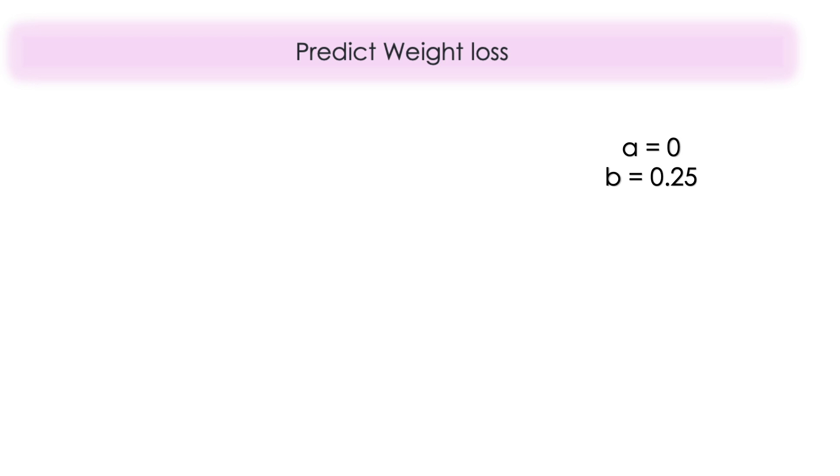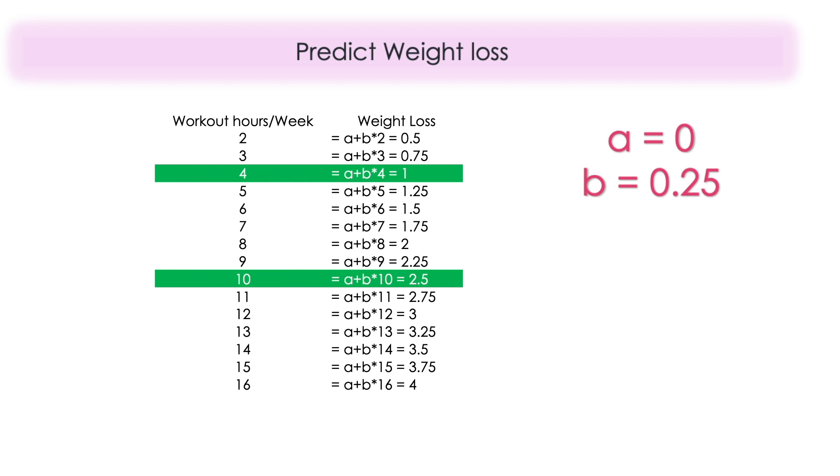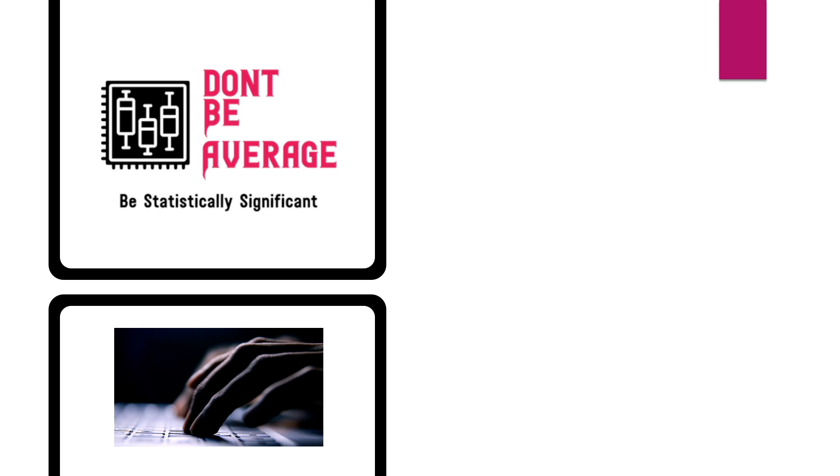Let's make it even better. We will check out the weight loss example. So let's say here estimated a is zero and b is 0.25. Let's take some time to understand this. A is zero means if you don't work out at all, you are not going to lose weight. So now based on these estimated a and b, we are going to predict the weight loss. So here it is. We have put this values of a and b into the equation and we have predicted the weight loss. For four hours you're going to lose one kilo and 10 hours you're going to lose 2.5.